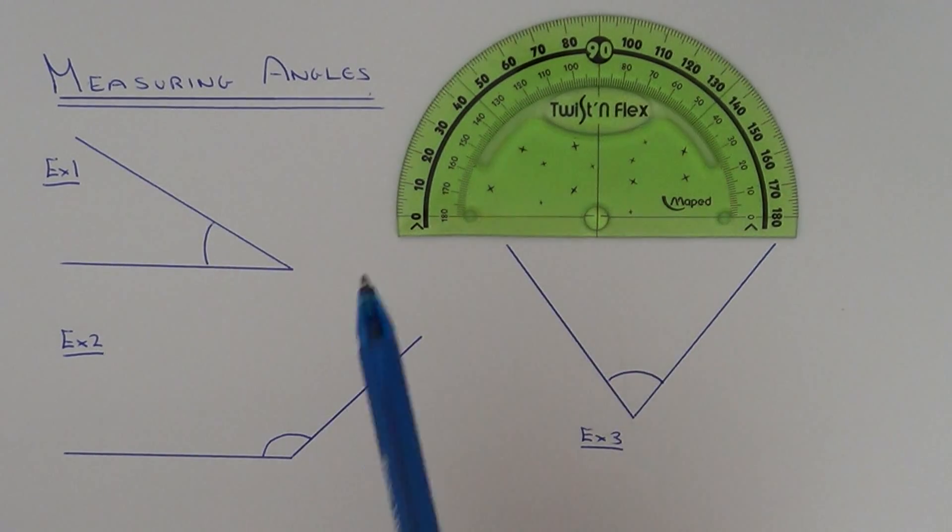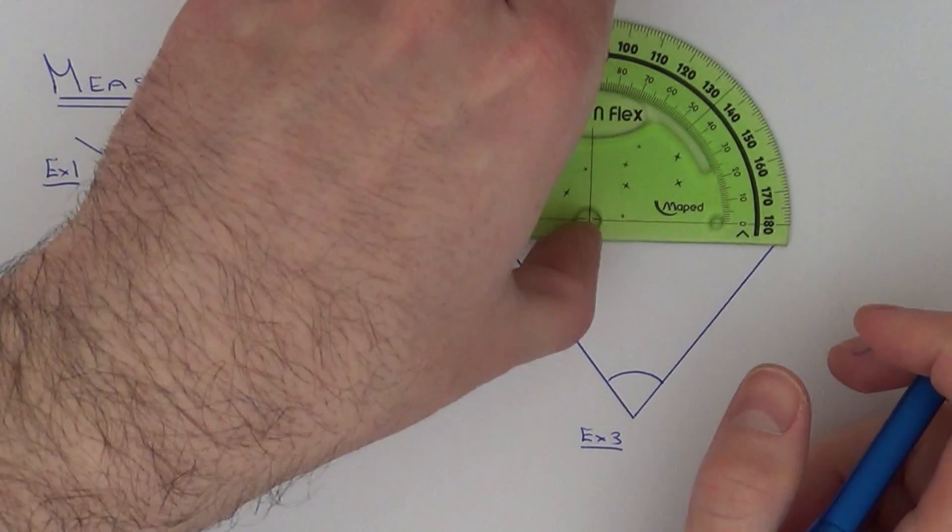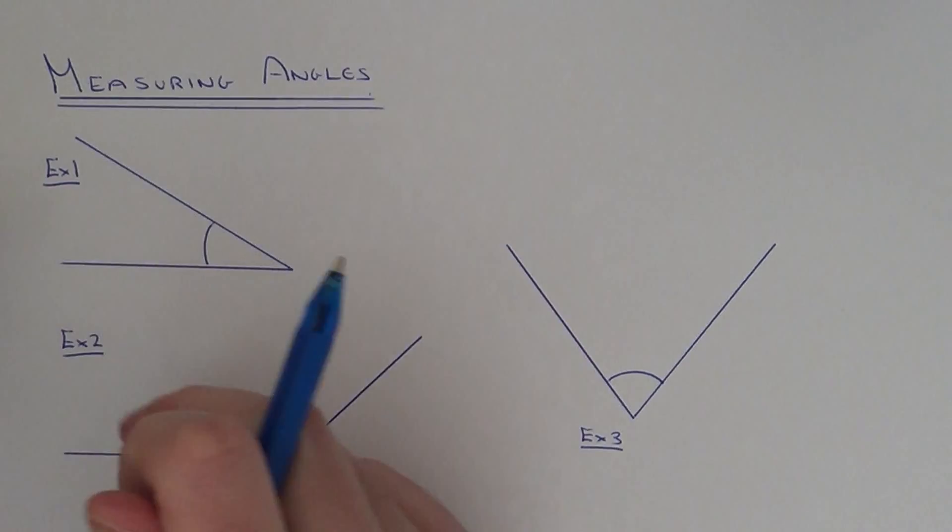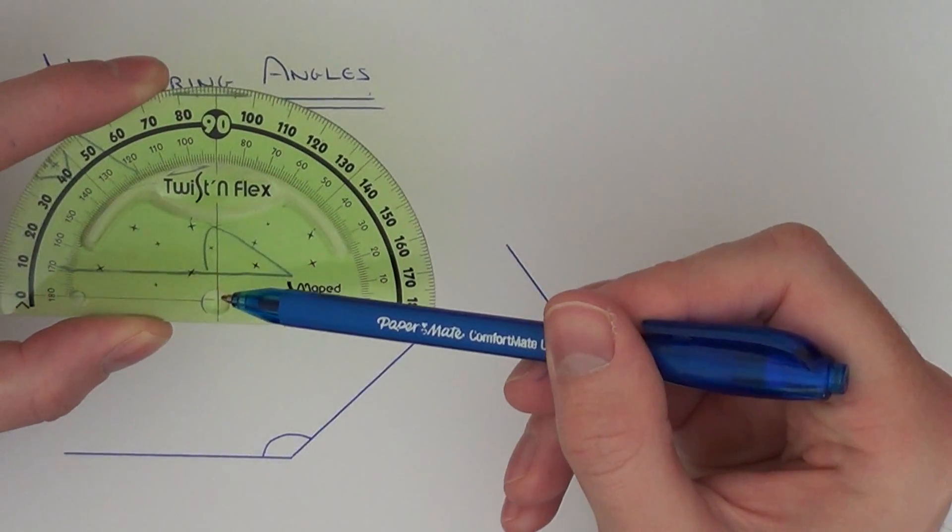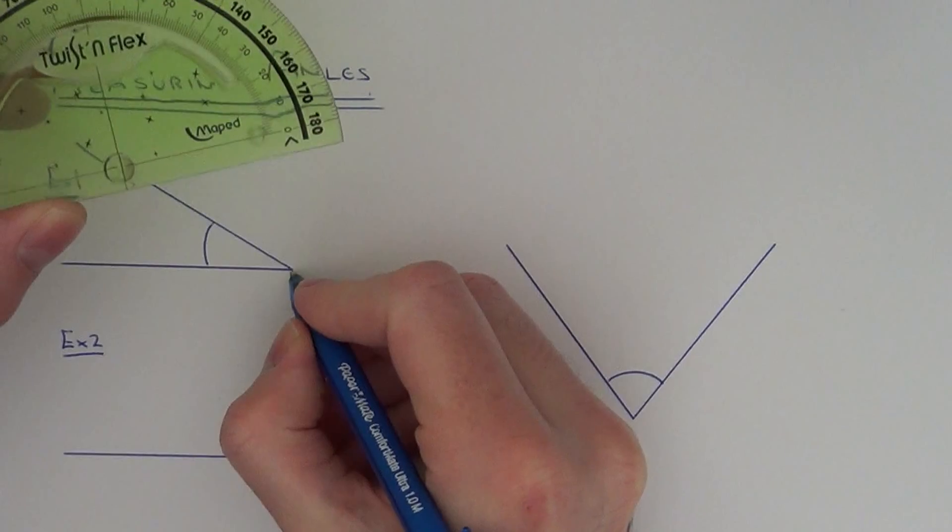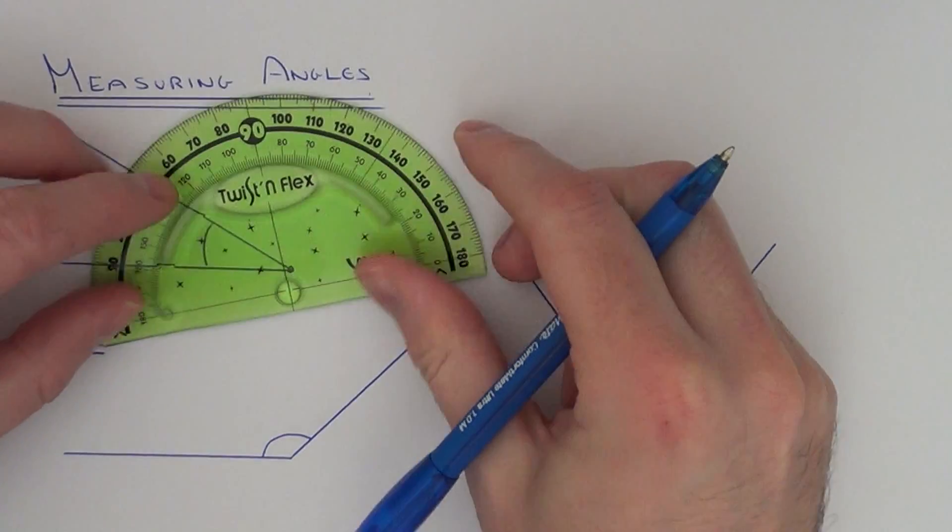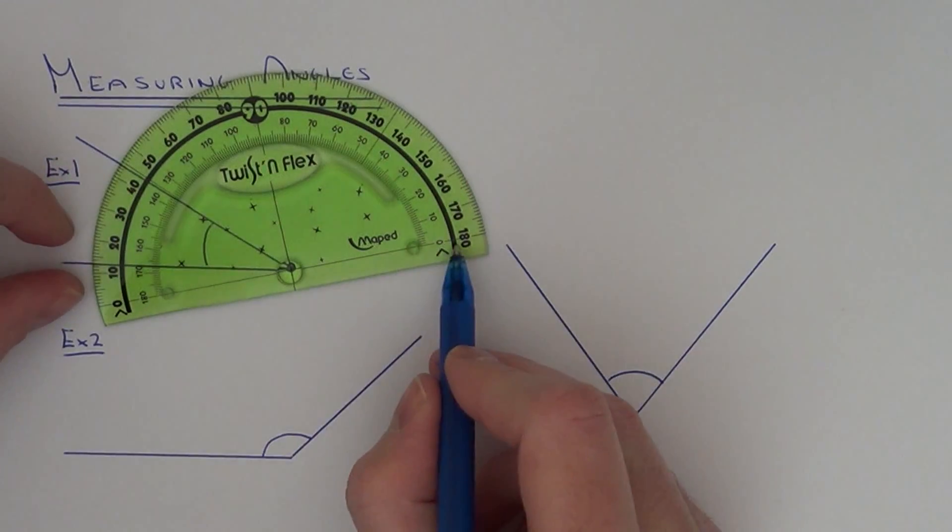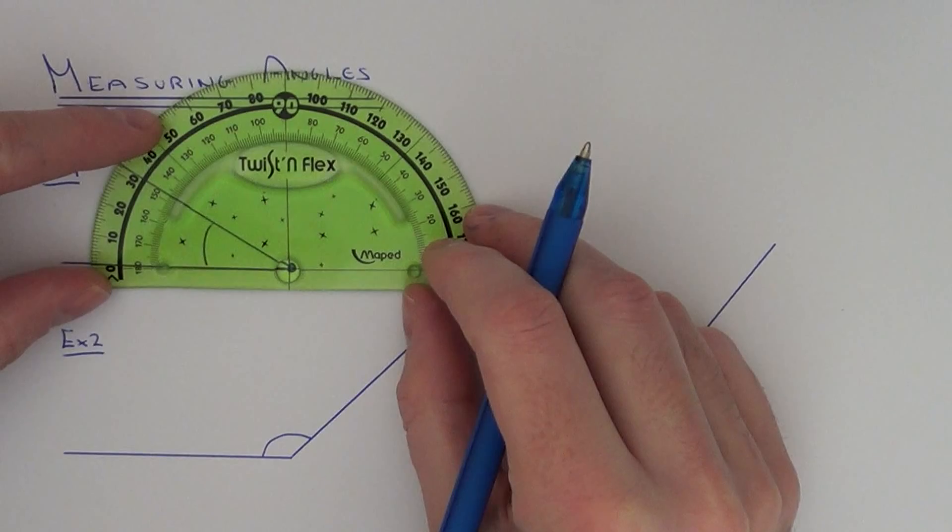So let's have a look at example one. We need to measure the size of this angle here. The first thing you have to do is put the center of your protractor onto the corner of your angle, and then you need to move the bottom line onto the bottom line of your angle.